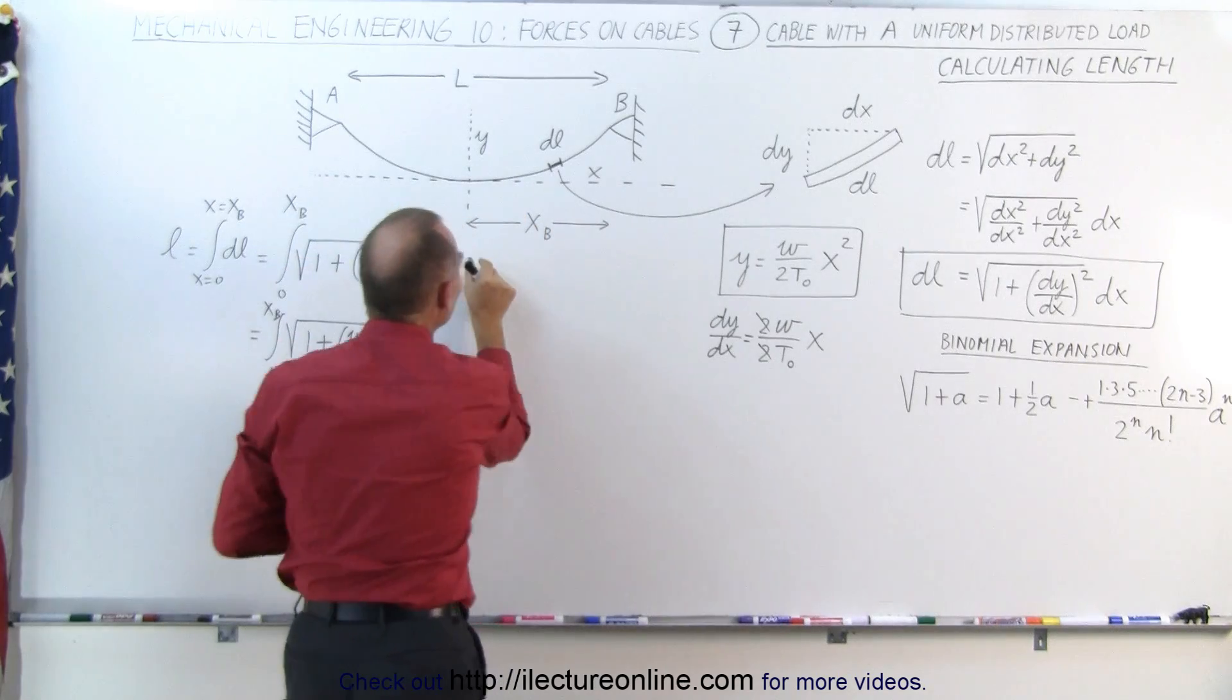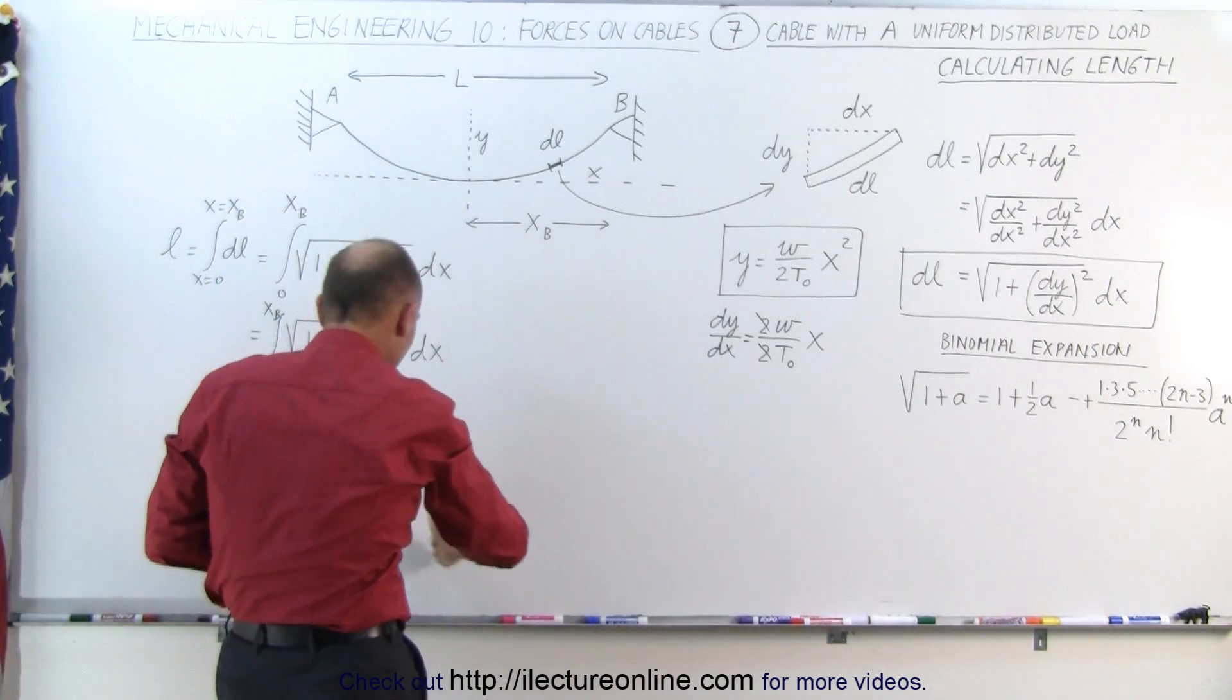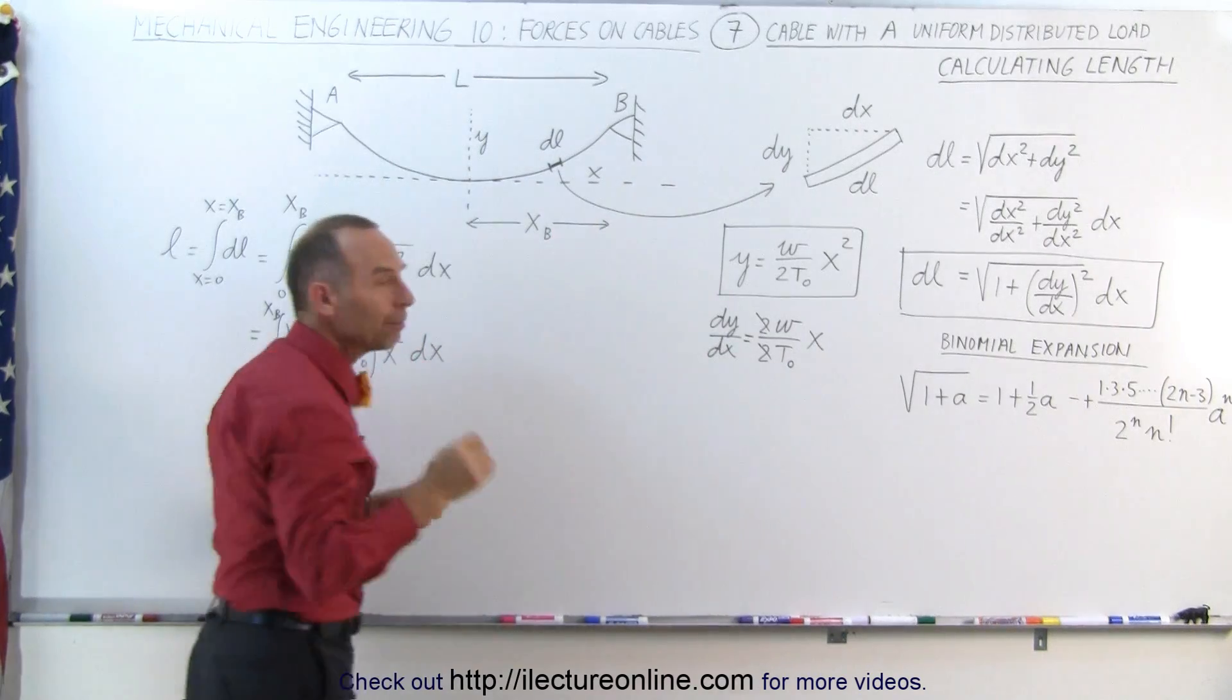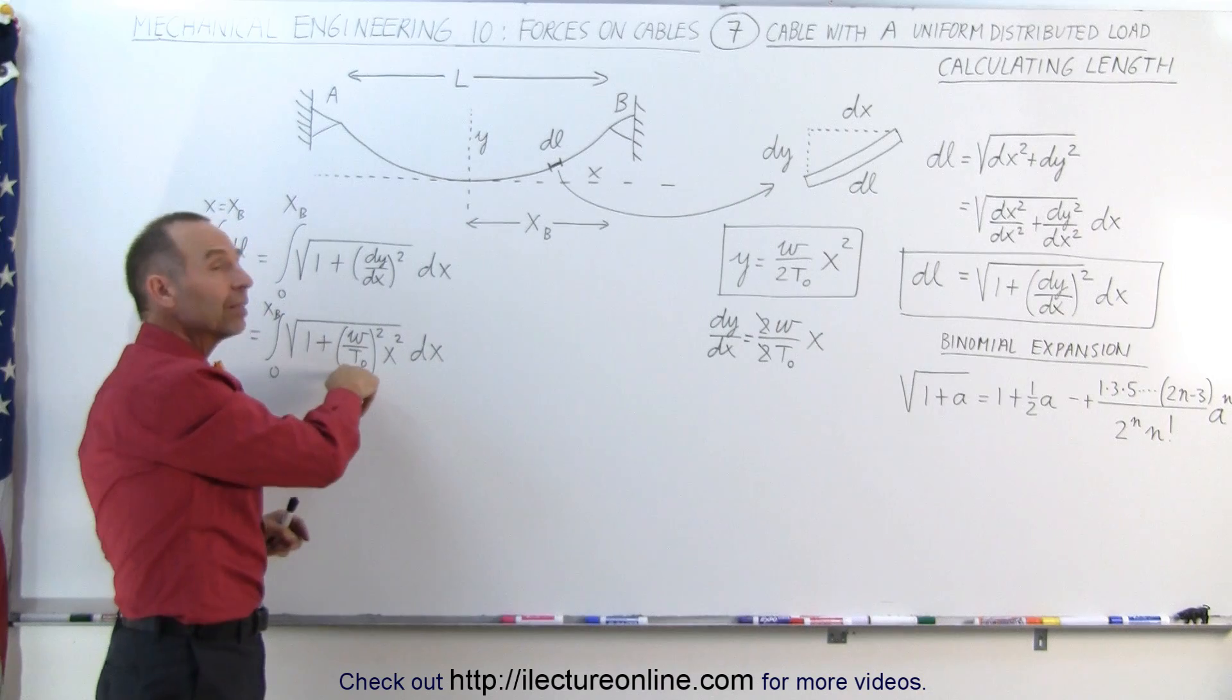The more sag there is, the less tension there's going to be in the X direction. And of course, if you have a cable that hangs like this, then there will not be very much tension in the horizontal direction, then T will be relatively small, and then this may no longer work.